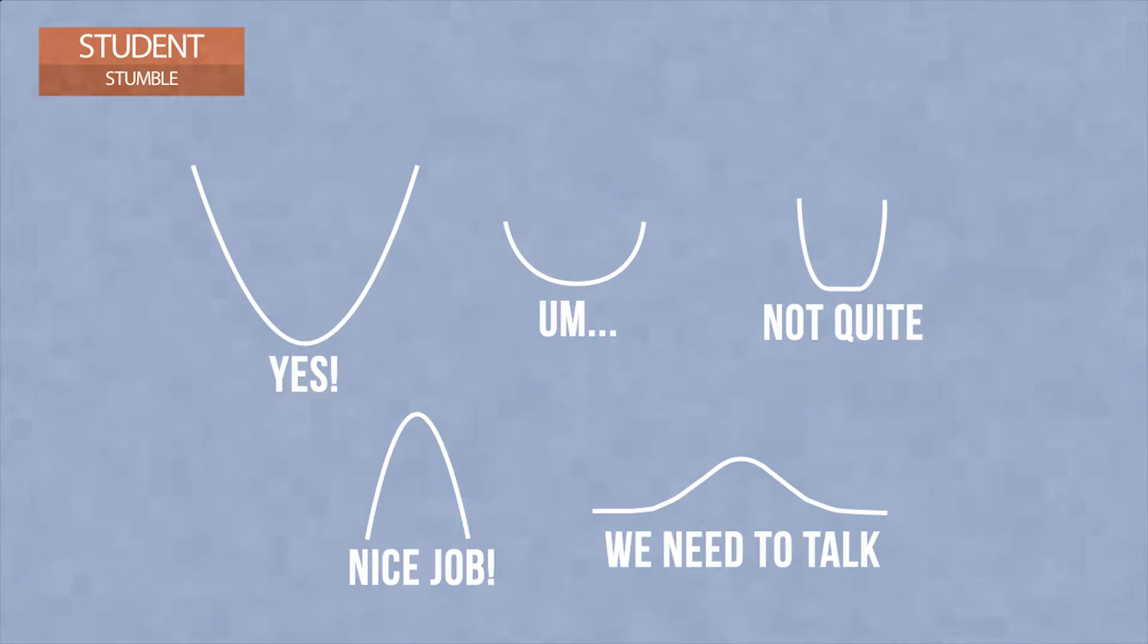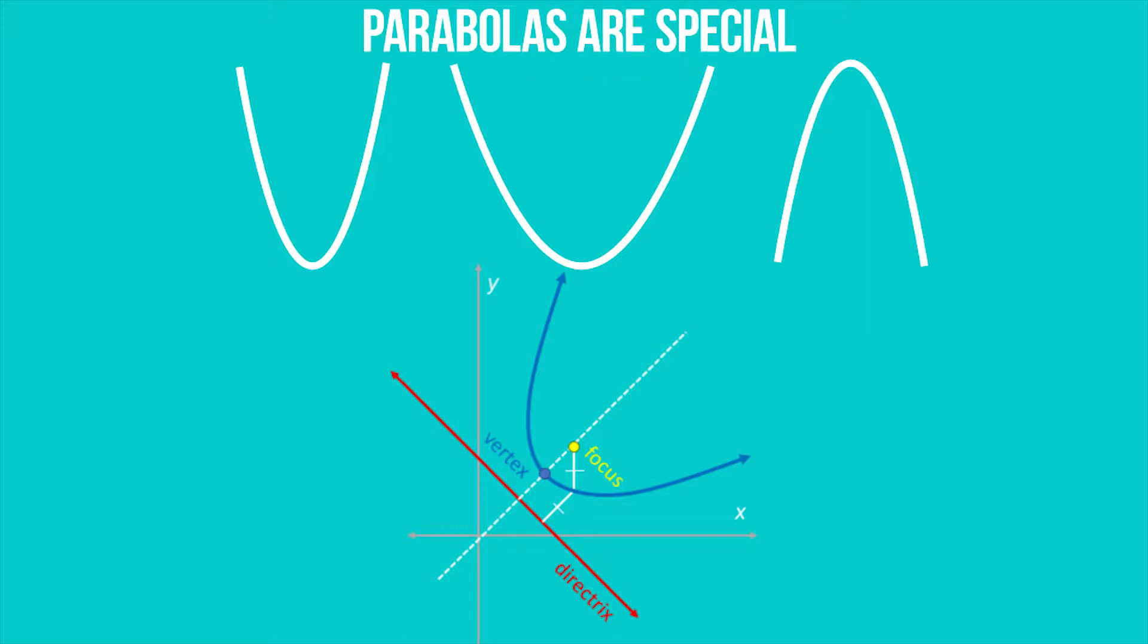This is kind of tricky because, yes, parabolas vary quite a bit. They can be narrow or wide, concave up or concave down. They can even be askew if you define them with a focus and directrix. But, nevertheless, parabolas are a special U-shape.